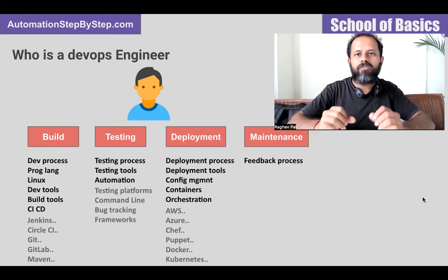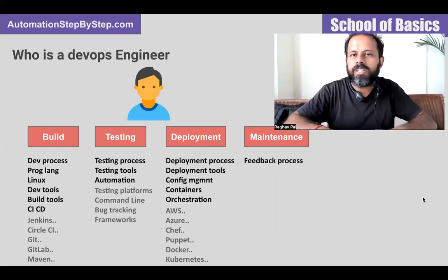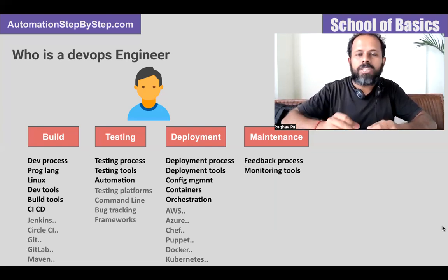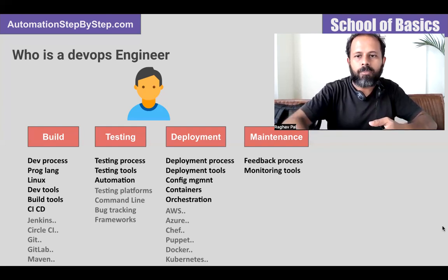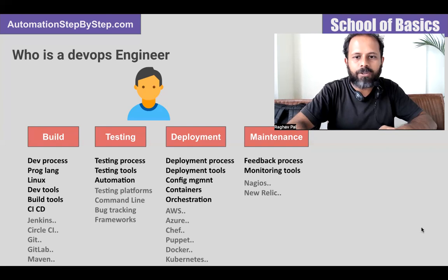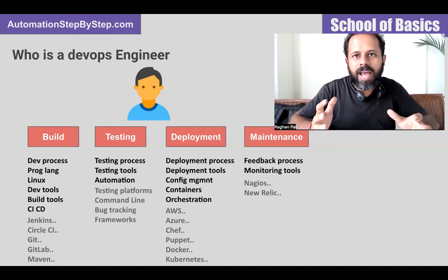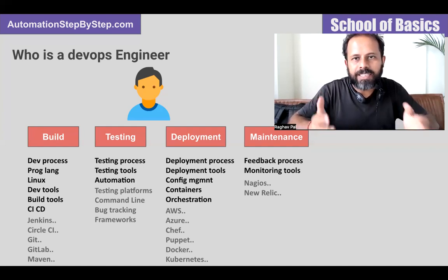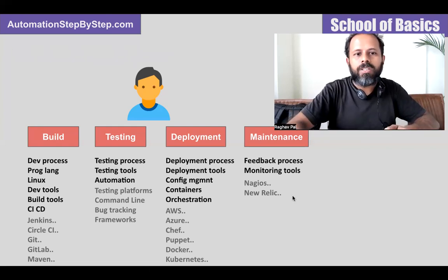Coming to the maintenance or monitoring phase, the DevOps engineer will have information and knowledge about the feedback process: after releasing the application, how do we get the feedback, how can we check the production logs, and based on that how can we take further actions. He will have knowledge about monitoring tools like Nagios and New Relic. Typically, a DevOps engineer will have visibility in all these stages, understand the complete processes followed by each phase, and know the tools used by each team.